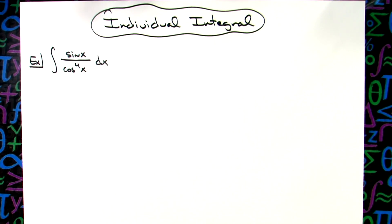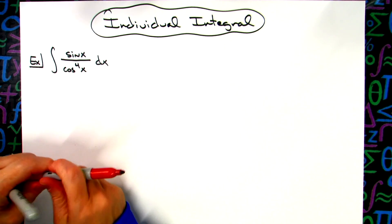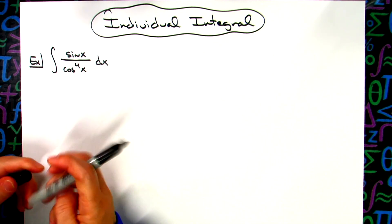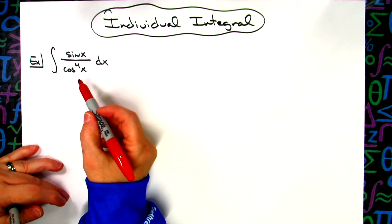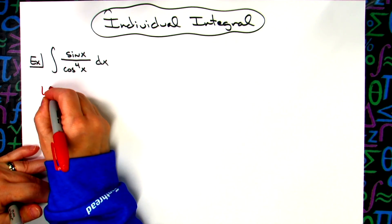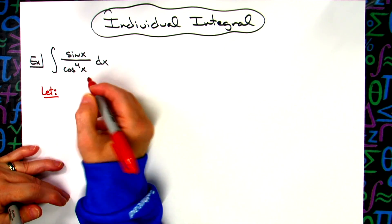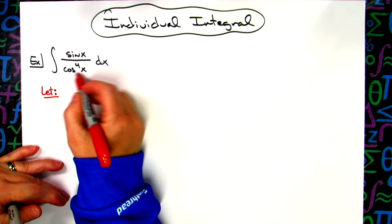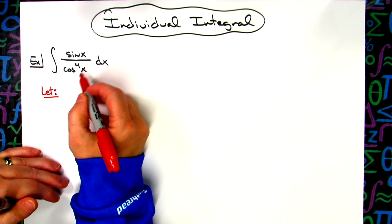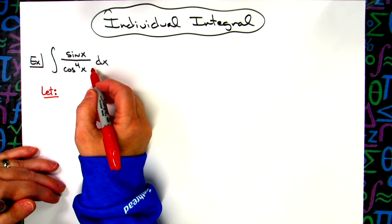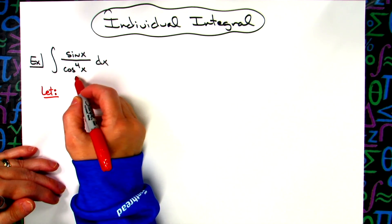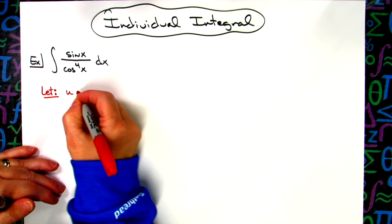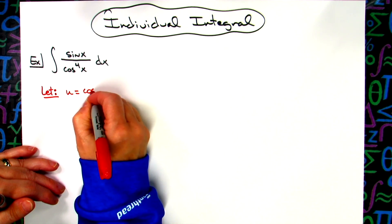In this video we're going to be doing an individual integral. It is going to be just a basic u-substitution integral, one which would be found in a Calc 1 class. We're going to start by letting u be the inside part of that denominator. That denominator is cosine x raised to the fourth power. The raised to the fourth power is the outside function, and cosine x is the inside function. So I'm going to let u be cosine x.